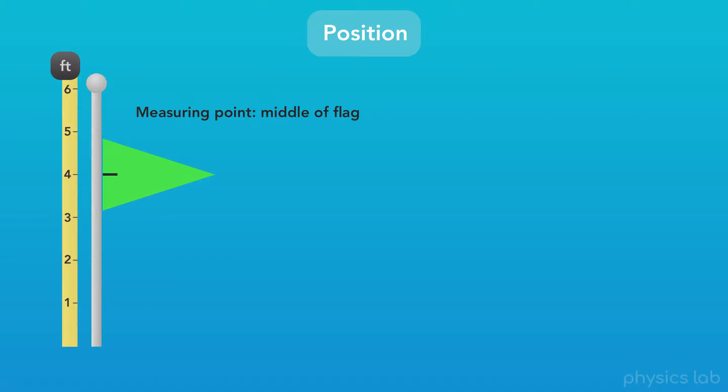Now, instead of saying up or down, we can more precisely say the flag is four feet from the bottom or the flag is two feet from the bottom. Now, we're describing the exact position of the flag on this flagpole.